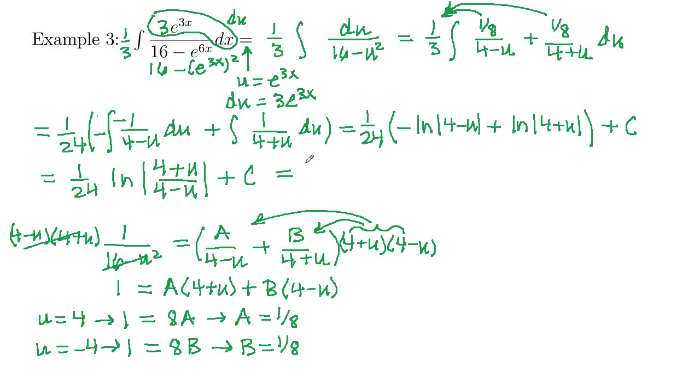Now we just have to reverse our substitution. U is e to the 3x. So this will be 1 twenty-fourth, natural log, absolute value, 4 plus e to the 3x, over 4 minus e to the 3x. And we do need our absolute values there, plus c, because this denominator could go negative. Numerator is always positive, though. So two methods here again. We had a u substitution followed by partial fractions.